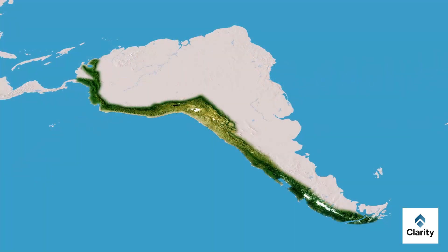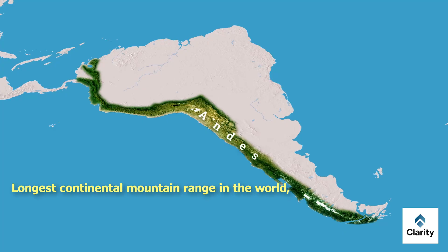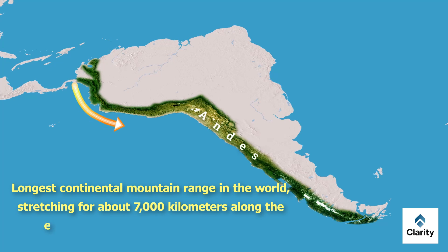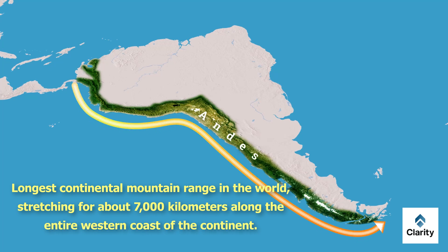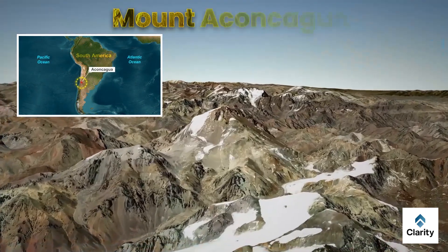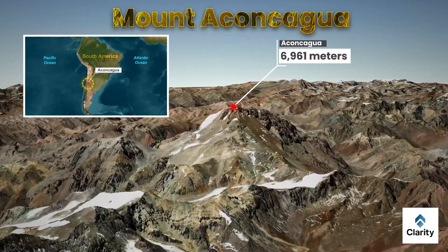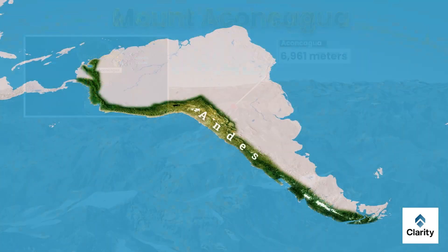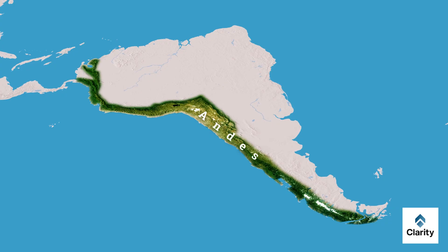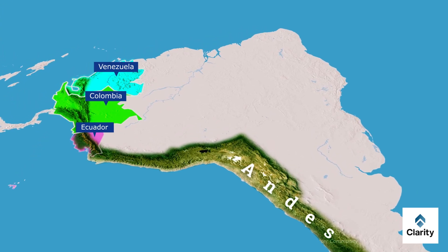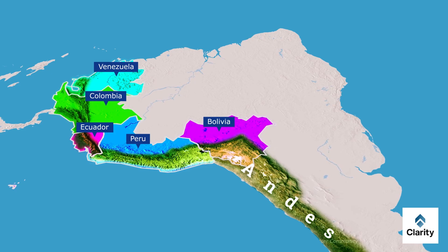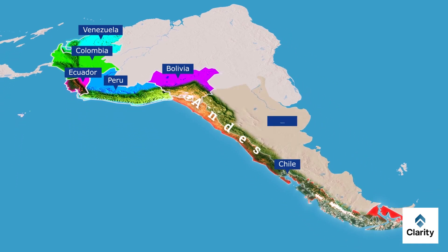Another important feature of South America is the Andes Mountains. They are the longest continental mountain range in the world, stretching for about 7,000 kilometers along the entire western coast of the continent. The Andes have the highest peak outside Asia — Mount Aconcagua in Argentina — which rises to 6,961 meters above sea level. The range passes through seven countries: Venezuela, Colombia, Ecuador, Peru, Bolivia, Chile and Argentina.